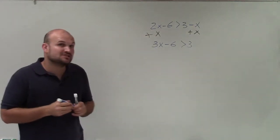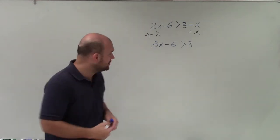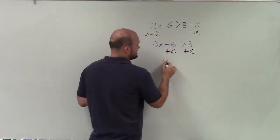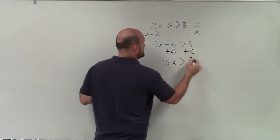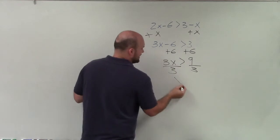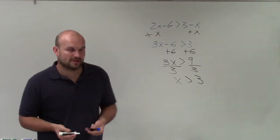Now to go ahead and solve for my variable, I'm simply just going to add 6 on both sides. So now I have 3x is greater than 9. Now to solve for x, I divide by 3, divide by 3, and I have x is greater than 3. So now I need to go ahead and graph the solution.